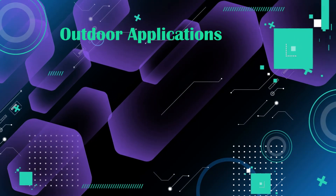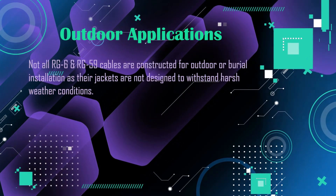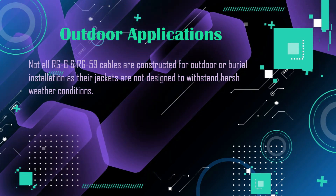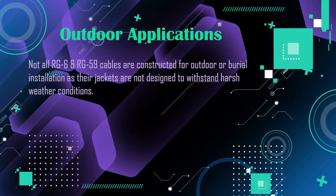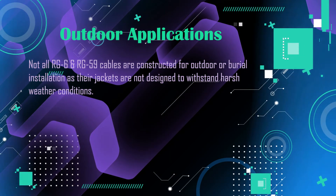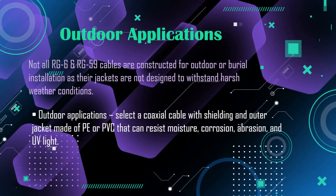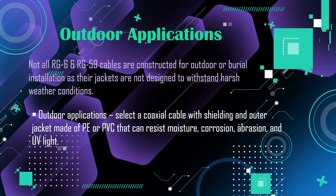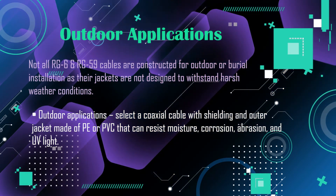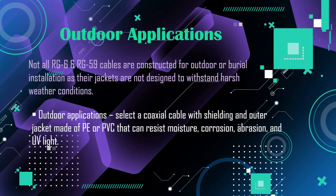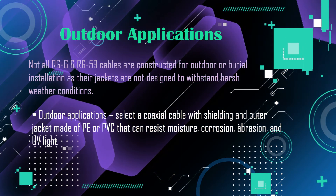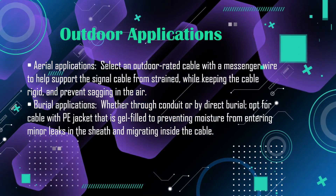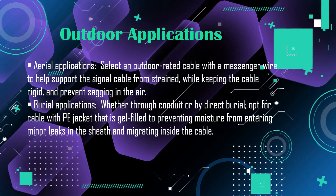Outdoor applications: not all RG6 and RG59 cables are constructed for outdoor or burial installation, as their jackets are not designed to withstand harsh weather conditions. For outdoor applications, select a coaxial cable with shielding and outer jacket made of PE or PVC that can resist moisture, corrosion, abrasion, and UV light.